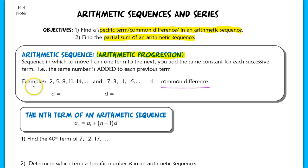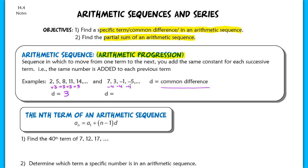For example, in this sequence, we are adding 3 to each term in order to get to the next term. So our common difference d is equal to 3. In the next sequence here, I'm subtracting 4 from each term to get to the next term — or you can also say you're adding negative 4. So my common difference here is negative 4.